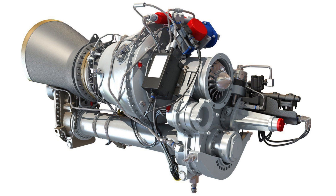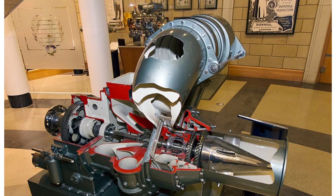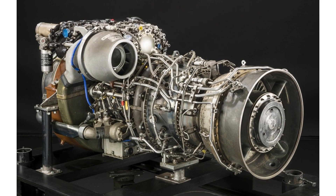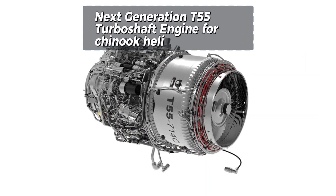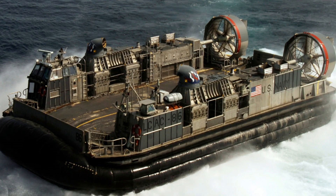They are even more similar to turboprops, with only minor differences, and a single engine is often sold in both forms. Turboshaft engines are commonly used in applications that require a sustained high power output, high reliability, small size, and lightweight. These include helicopters, auxiliary power units, boats and ships, tanks, hovercraft, and stationary equipment.